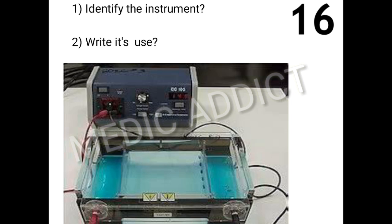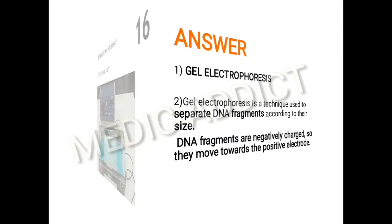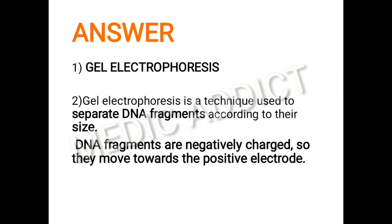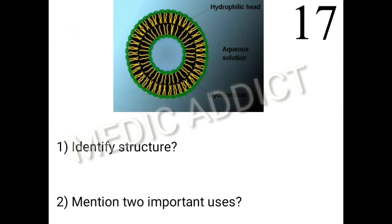The next spotter asks to identify the instrument shown and write down its use — another practical biochemistry question from your labs. The given instrument is gel electrophoresis, a technique used to separate DNA fragments according to their size. Since DNA fragments are negatively charged, they move towards the positive electrode. This technique is useful in identifying and diagnosing diseases that are congenital or mainly due to faulty location or dislocation of chromosomes.